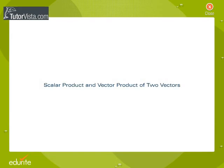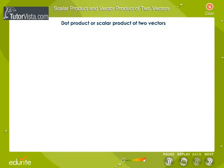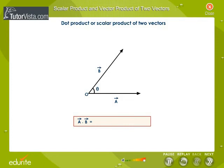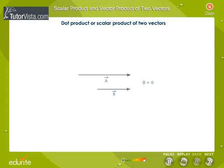Scalar product and vector product of two vectors. The dot product of two vectors a and b is defined as a product of the magnitudes of the two vectors multiplied by the cosine of the angle between them. The scalar product of two vectors is a scalar.